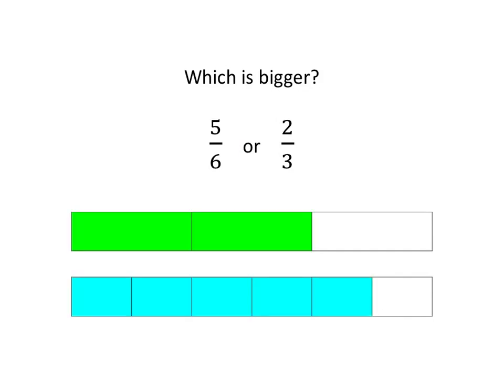Hopefully by now you came up very easily with the following picture. For five-sixths, you cut it into six pieces and you took five of them. For two-thirds, you cut it into three pieces and you took two of them. You can immediately then see that your five-sixths is a much bigger chunk than your two-thirds. So the answer to this question is that five-sixths is bigger.